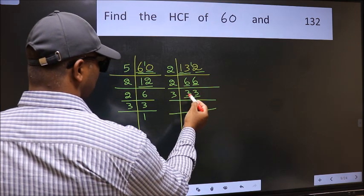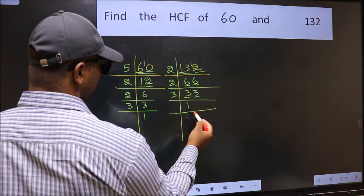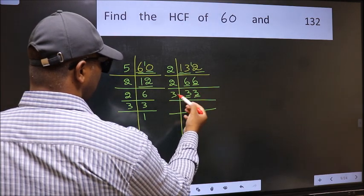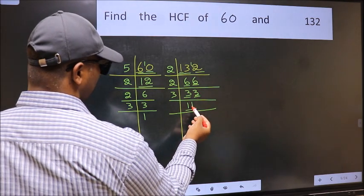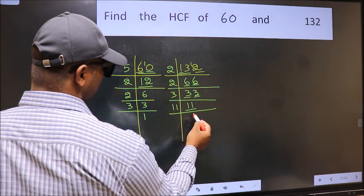First number 3. When do we get 3 in 3 table? 3 once 3. The other number 3. Now here we have 11. 11 is a prime number. So 11 once 11.